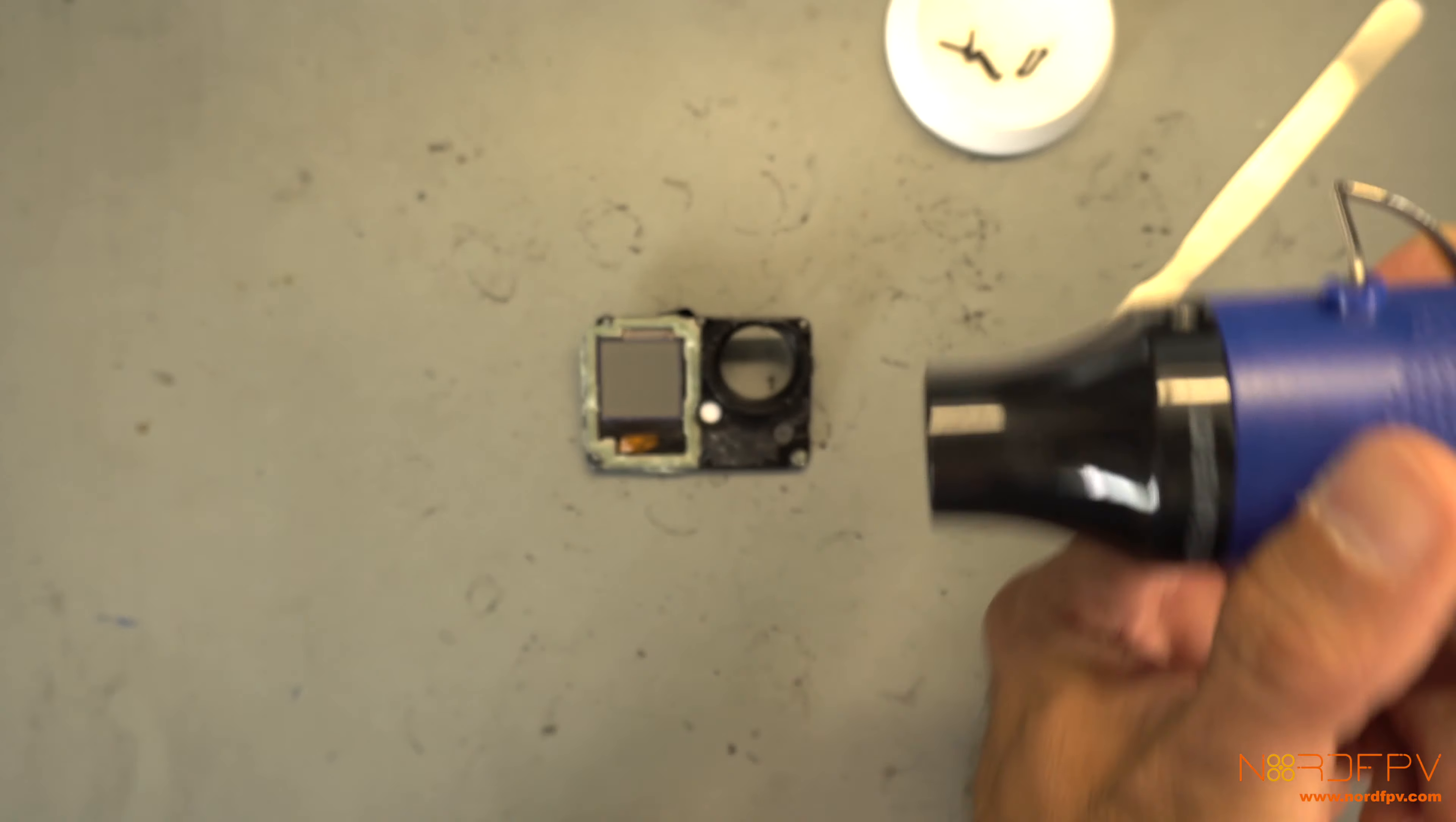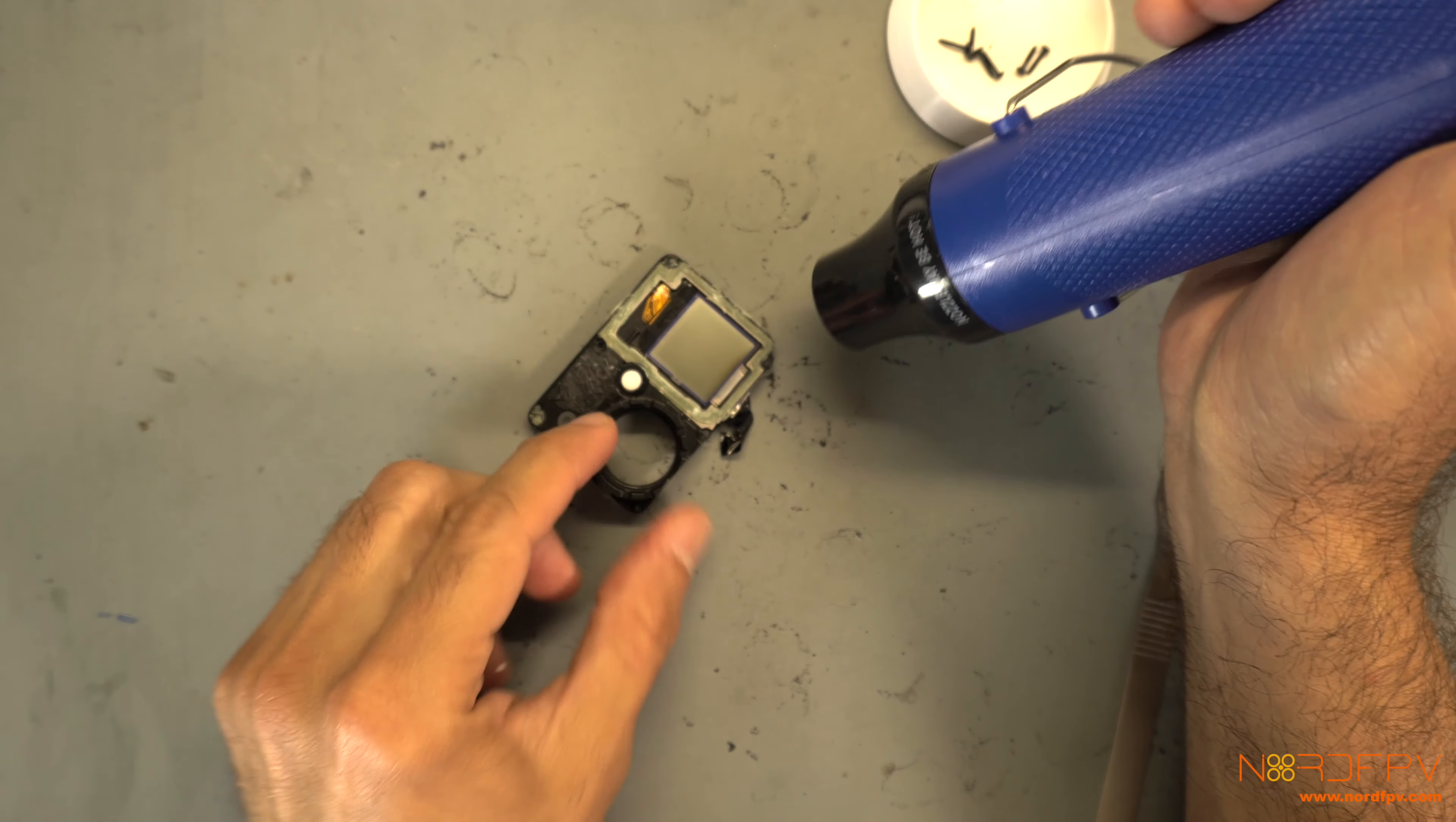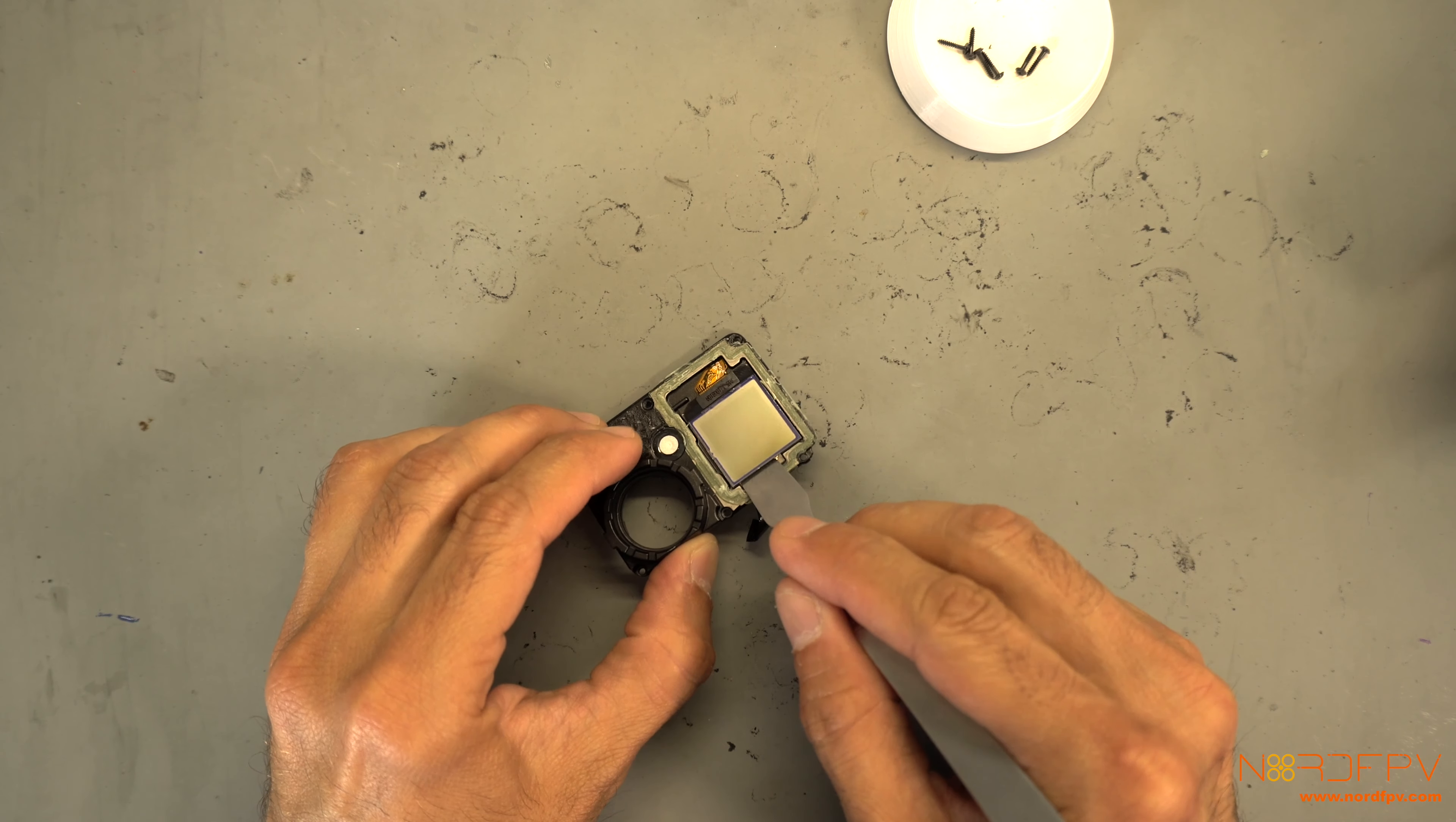Try to be careful with the heat gun because if you apply it for too long you might hurt your screen. You see here that it started to get a little bit black, and that could be bad for your screen.